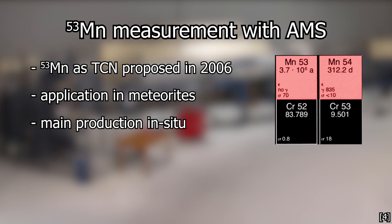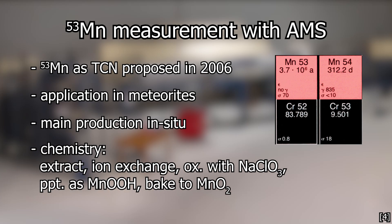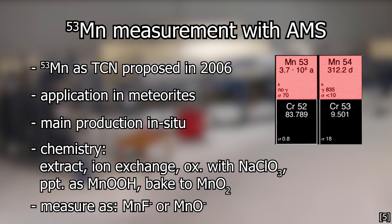But here we also have a very significant isobaric problem — chromium must be chemically suppressed before measurement. After the usual rock crushing and iron extraction, the material is run through a cation exchanger where manganese 2+ is retained rather poorly and chromium 3+ minimally better. The manganese is then oxidized with sodium chlorate to manganese 3+ and precipitated as an oxide hydroxide, then baked into the dioxide for measurement. The chromium 53 background can be further minimized in the AMS by measuring the sample as a manganese fluoride ion. There are many current studies primarily concerned with optimizing manganese 53 measurements in the AMS.